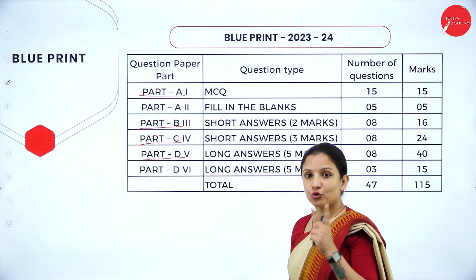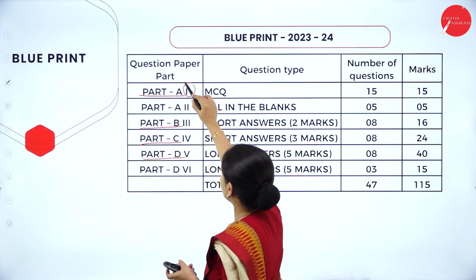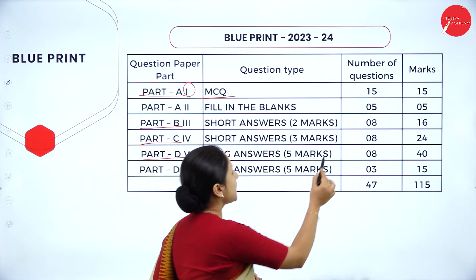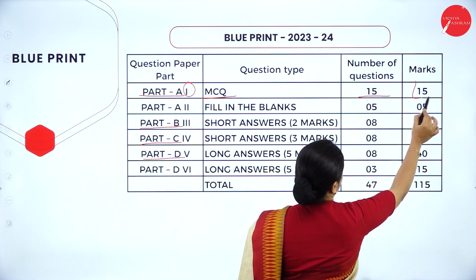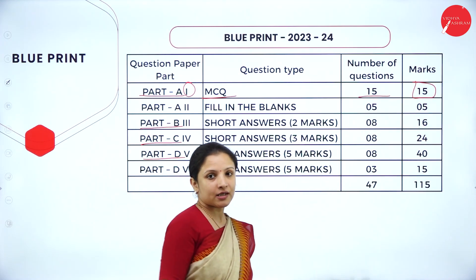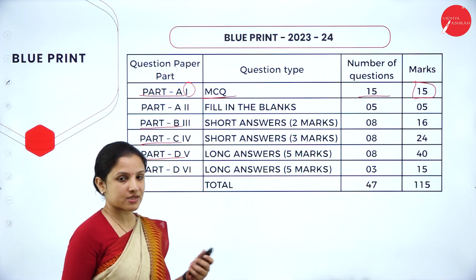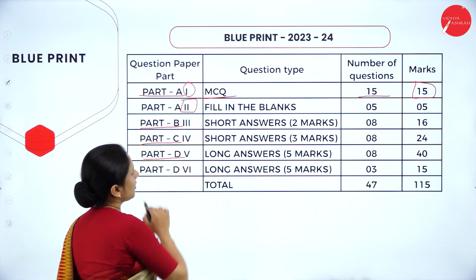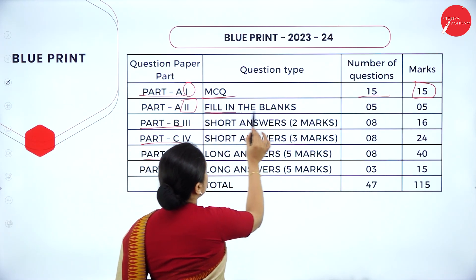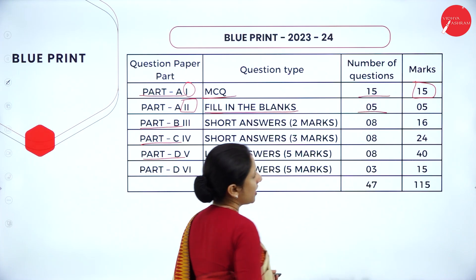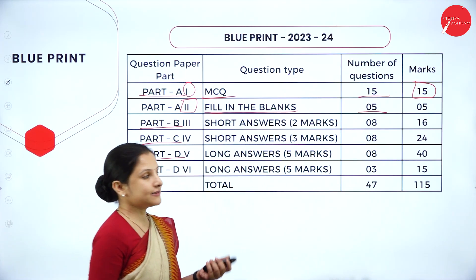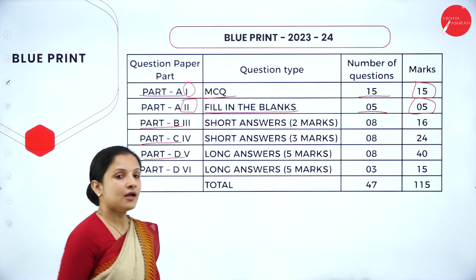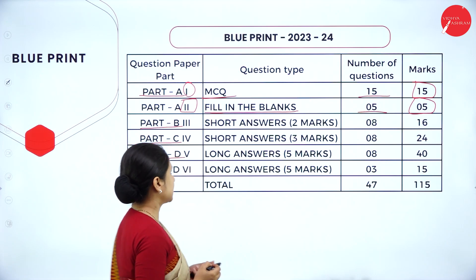In Part A there are two mains. In the first main, 15 multiple choice questions will be asked, carrying a total of 15 marks, and all the questions are compulsory. In the second main of Part A, there are 5 fill-in-the-blank questions, each carrying 1 mark, giving a total of 5 marks — all compulsory.